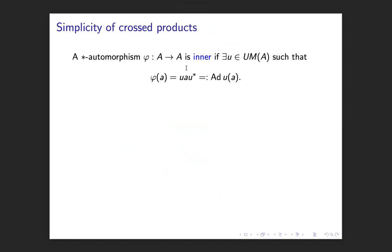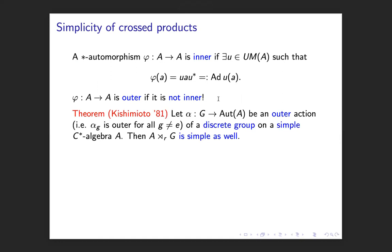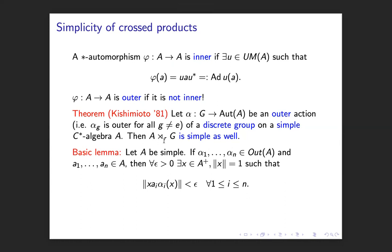A *-automorphism is called inner if there exists a unitary element in A (or the multiplier algebra if A is not unital) such that phi(a) = U·a·U*. An automorphism is outer if it's not inner — there is no unitary such that alpha is given by Ad U. There's a classical theorem by Kishimoto: if you have a discrete group and an outer action on a simple C*-algebra A, then the reduced cross product is always simple.